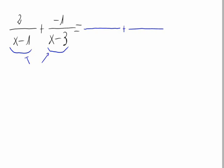First of all, we have to calculate the minimum common multiple of the denominators. As we can see, these polynomials are irreducible polynomials. They cannot be factorized anymore because they are first degree polynomials.